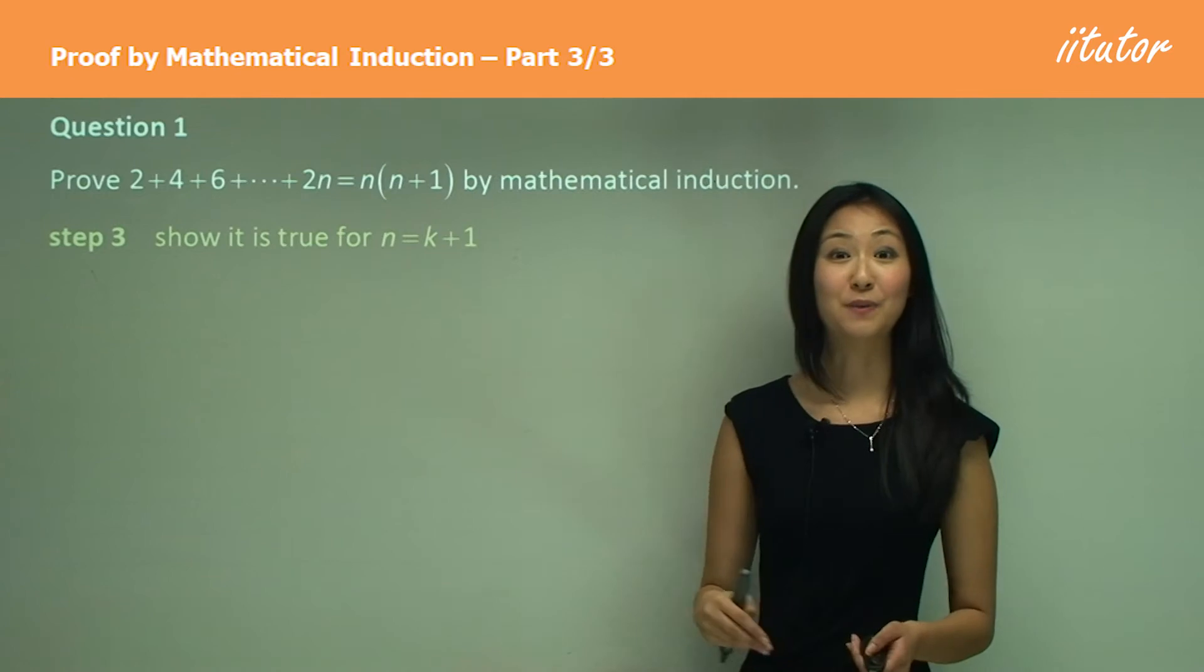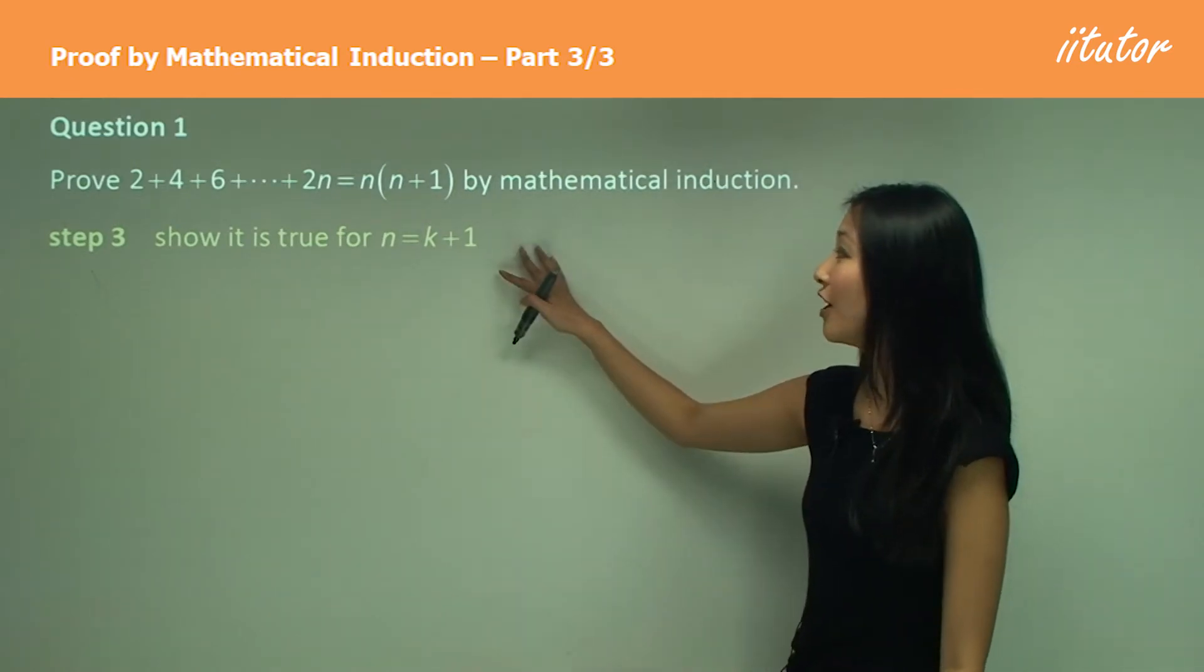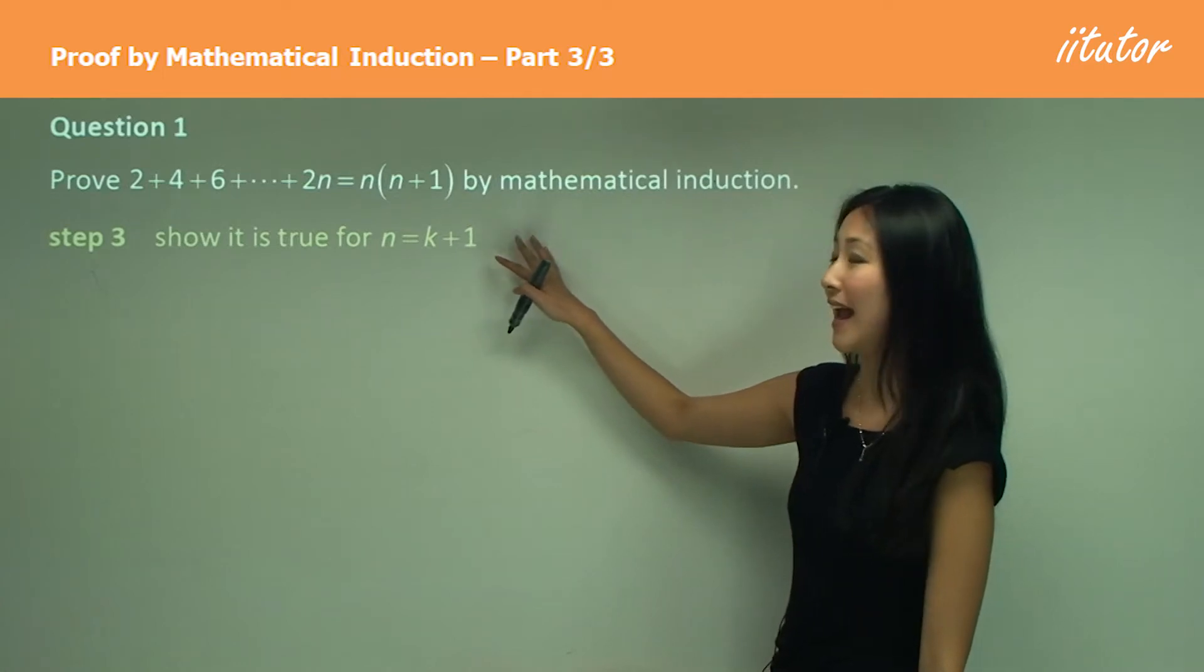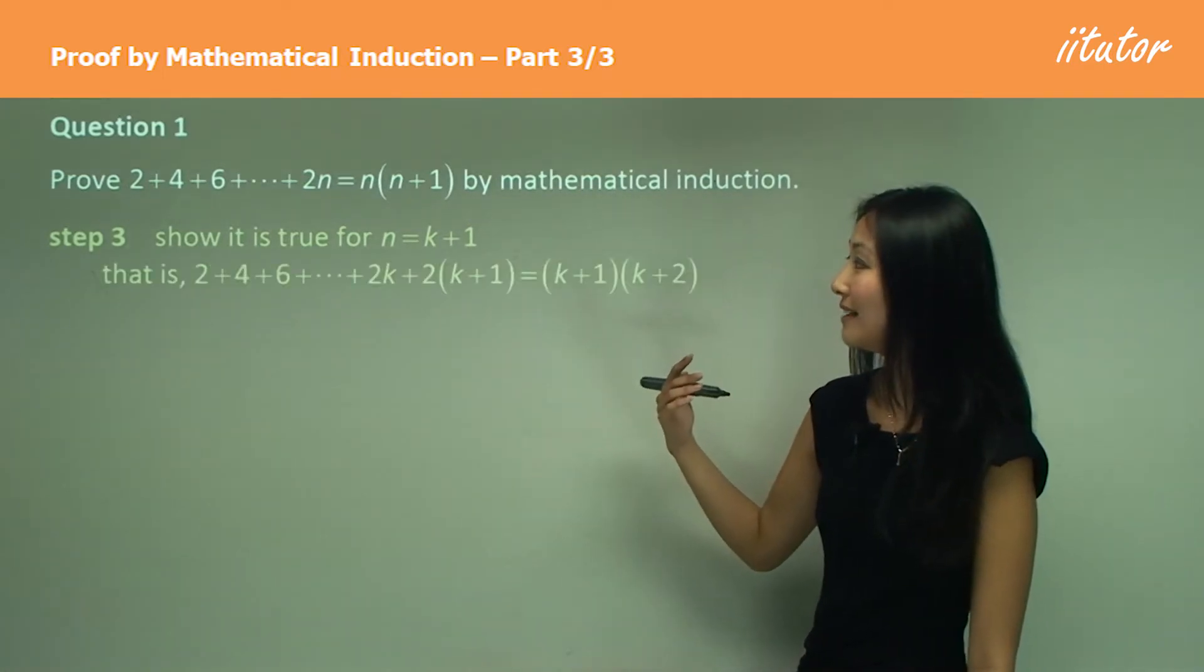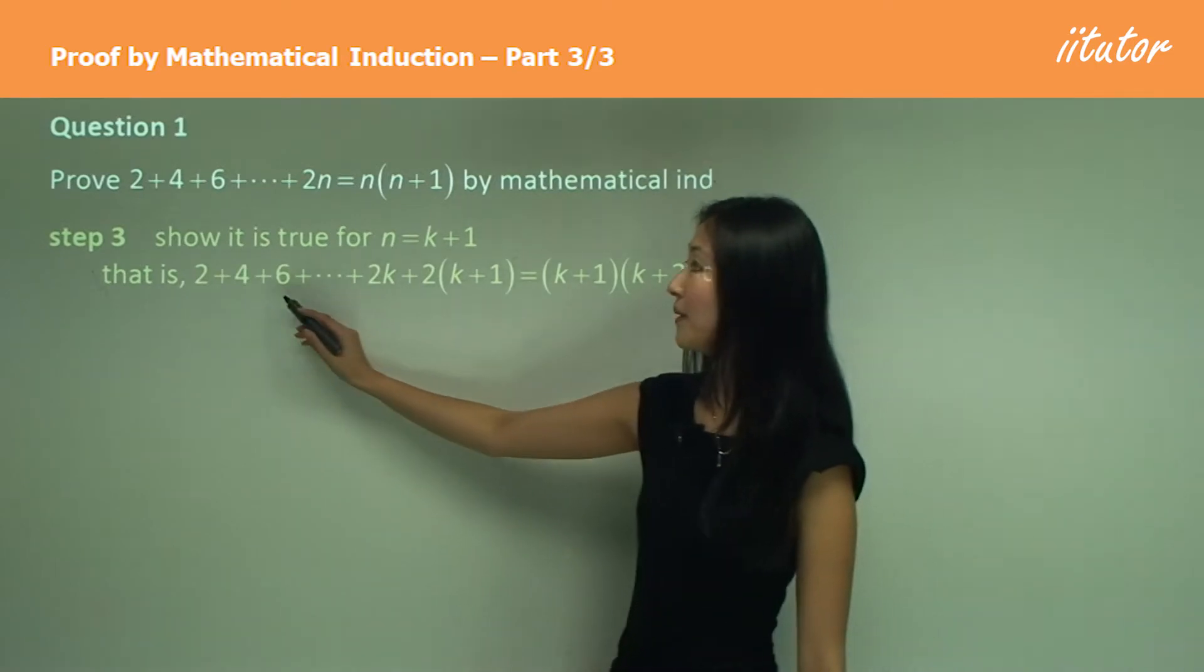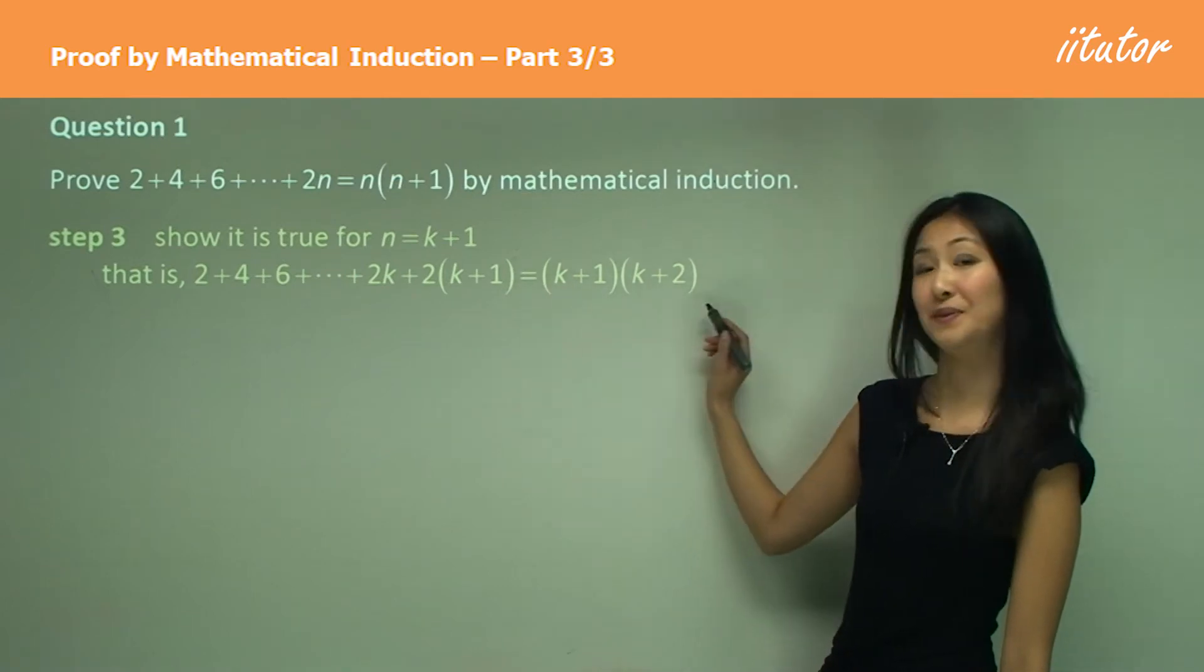Now, step three is when we get to finally showing and proving. So we want to show it is true for n equals k plus 1. That is, 2 plus 4 plus 6 plus 2k plus 2k plus 1 equals to this.